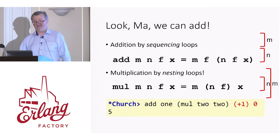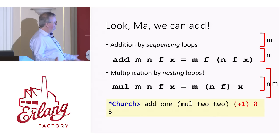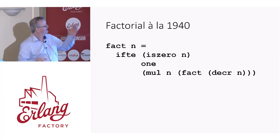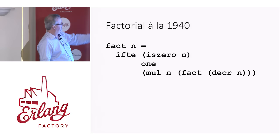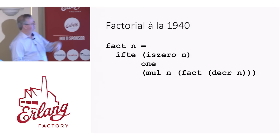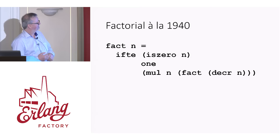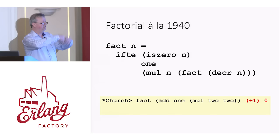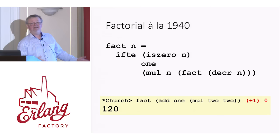We don't need integers either in our programming language. Here's the factorial function — I'm sure you've all been waiting for it. The factorial function, à la 1940. Factorial of n: if-then-else — if n is zero, we get one; otherwise, we multiply n by factorial of decrement n. Does it work? Here's factorial of five. We can construct that function, which should iterate the increment function 120 times, and yes, it works.